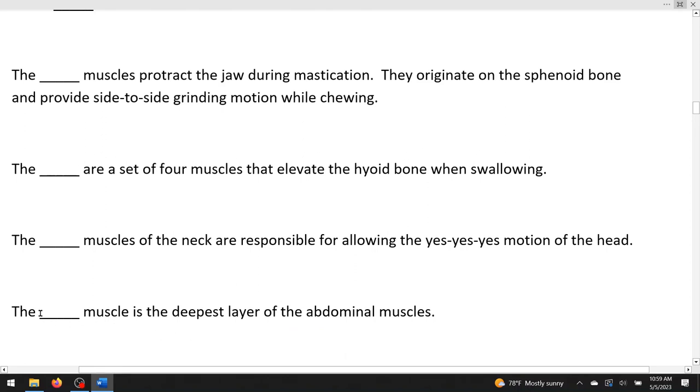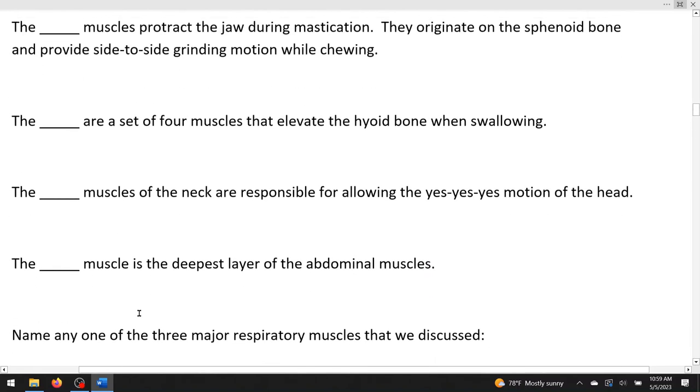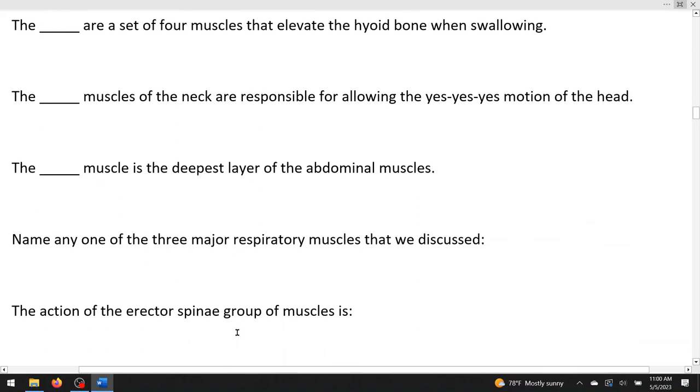The blank muscle is the deepest layer of the abdominal muscle. So doing the tire rule that we learned, T is the deepest, so that would be transversus abdominis. Name any one of the three major respiratory muscles that we discussed in our lecture, and that would be the diaphragm and the two sets of muscles known as the external and internal intercostal muscles. The action of the erector spinae group is what? Well, it gives it away in its name, right? To erect the spine or to straighten up the back.